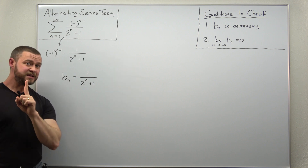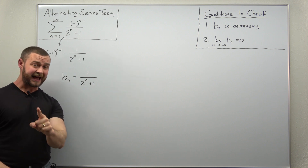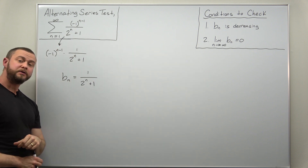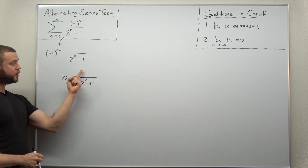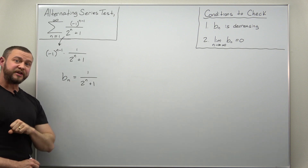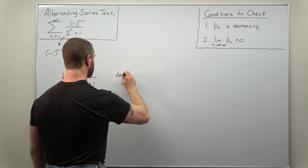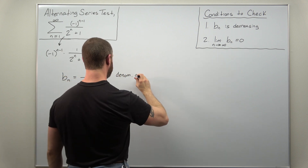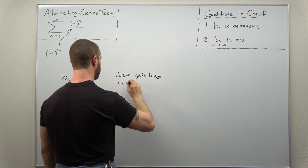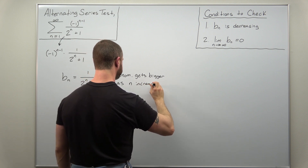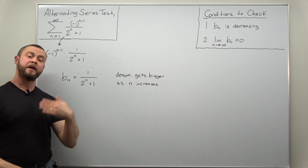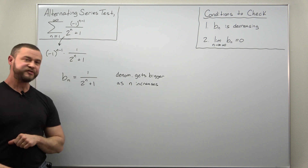So let's go ahead and check the decreasing part. Don't just state that — make sure you provide some work for your professors. So here we have our term, and notice the numerator is one, but the denominator is getting bigger as n increases. So you might just want to write something to the effect that the denominator gets bigger as n increases. And since this is one over a quantity that's getting bigger, that's going to get smaller, hence it's decreasing.